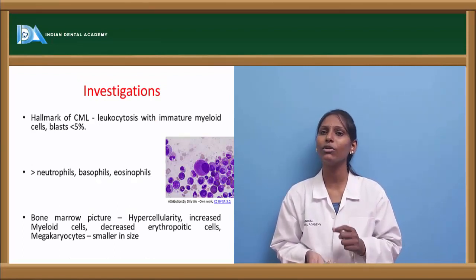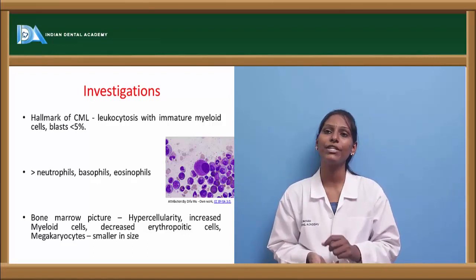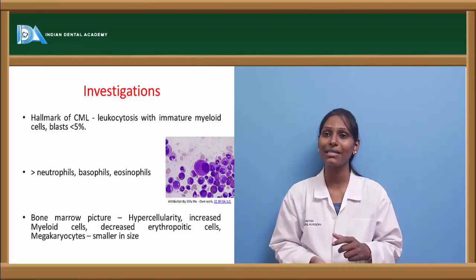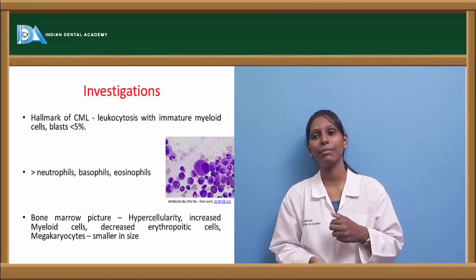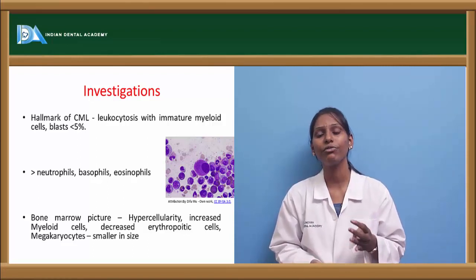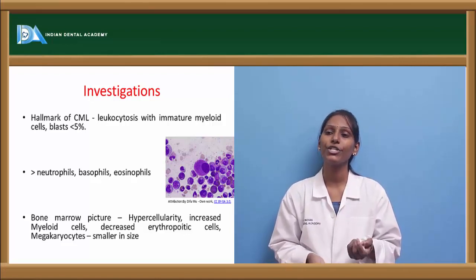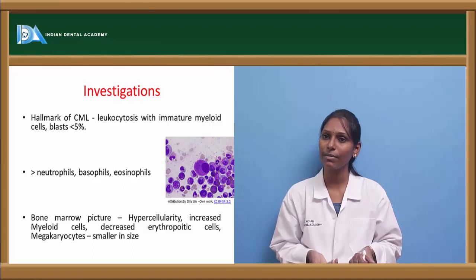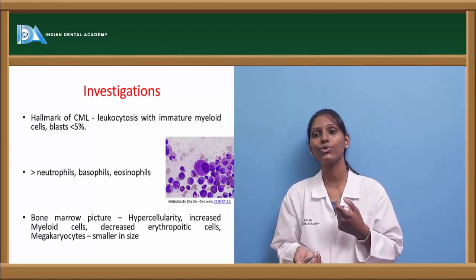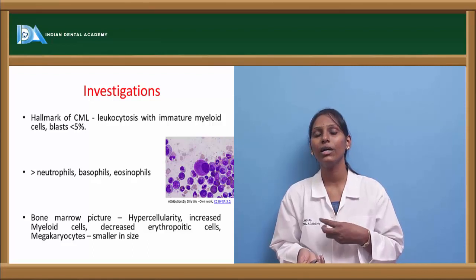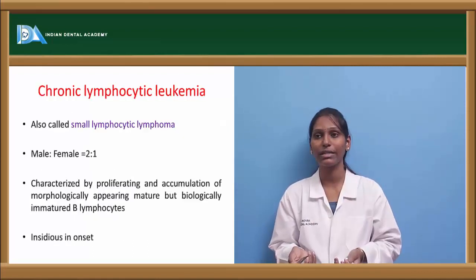The hallmark of CML in investigations is leukocytosis with immature myeloid cells — greater than 5% blasts are usually seen in the peripheral smear, with increased neutrophils, basophils, and eosinophils. Bone marrow picture shows hypercellularity, increased myeloid cells, decreased erythropoietic cells, and megakaryocytes that are usually smaller in size compared to normal platelets.